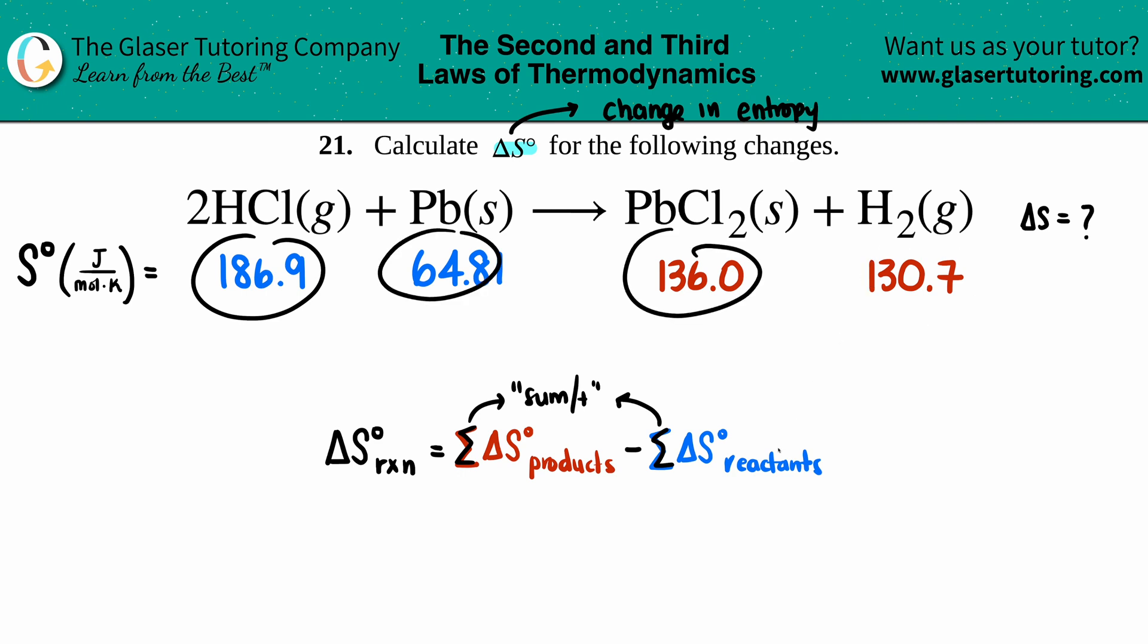Do I keep these values or change them? That goes by the coefficients. For HCl I have a 2, so I multiply this by 2. For Pb(s) I only have one, so multiply by 1. Same for PbCl₂—only one—so multiply by 1, and same for H₂.